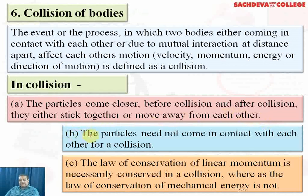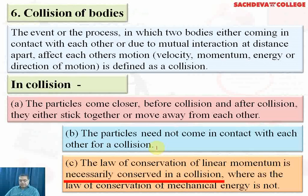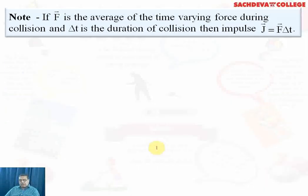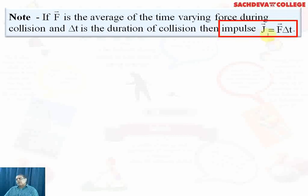The particles need not come in contact with each other for a collision — from a certain separation, they can show interaction. The law of conservation of linear momentum is necessarily conserved in a collision, whereas the law of conservation of mechanical energy is not. If F is the average time-varying force during collision and delta T is the duration of collision, then impulse is given as force multiplied by delta T, where delta T is a very small time. Impulse can also be stated as the change in momentum.